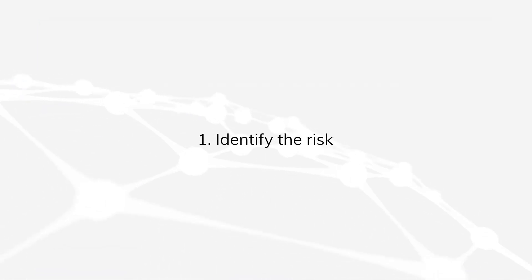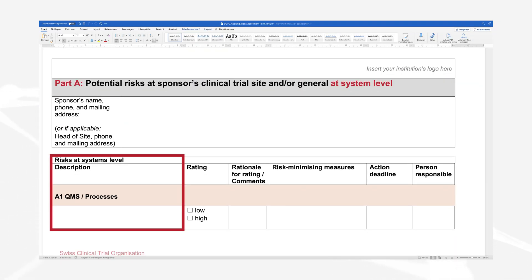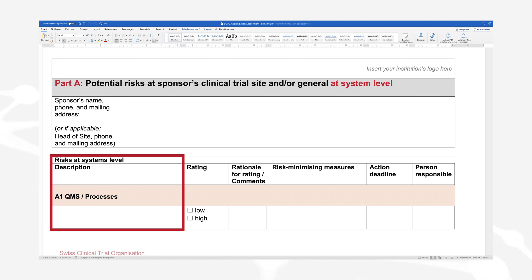Step 1: Identify the risks. In each section, take a good look at the tools, equipment, materials, and the processes or work methods. Write any issues or problems down that may potentially or actually cause harm to your clinical trial, your participants, or your data integrity. These are the trial risks.